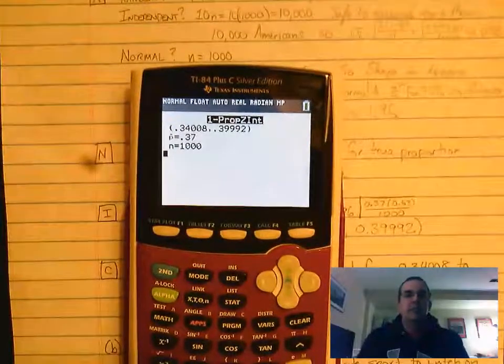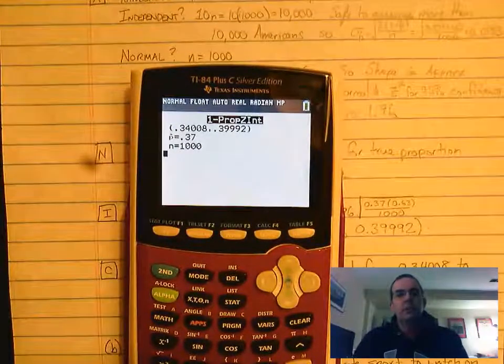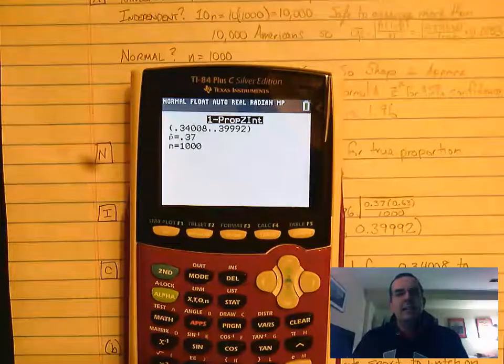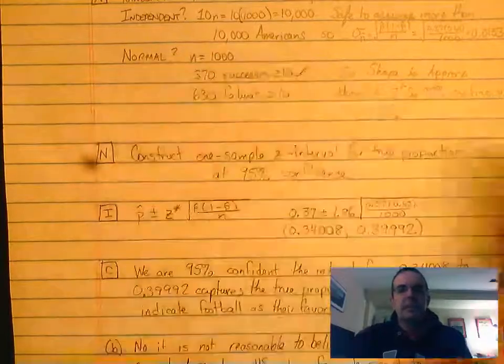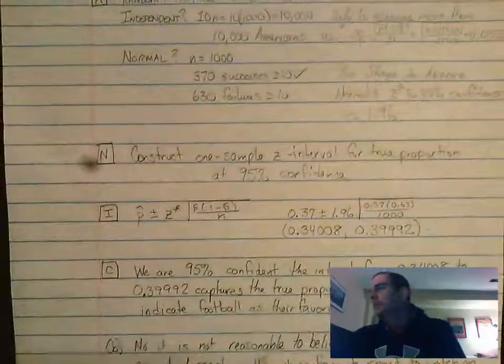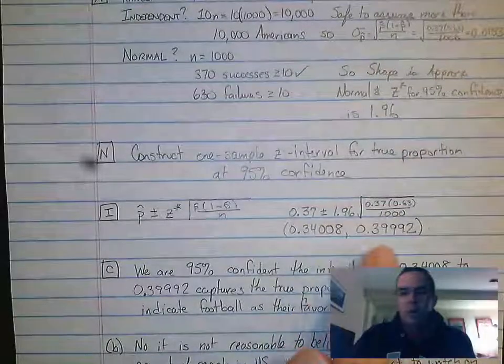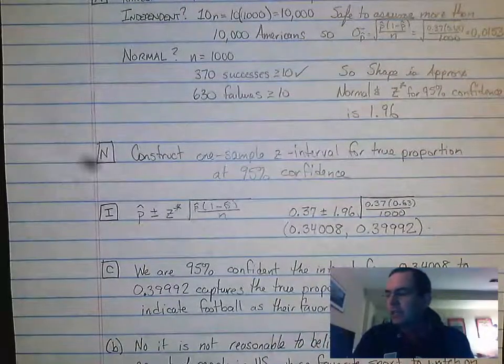And what it's going to do is it's going to give us the range, 0.34008 to 0.39992. So we're going to copy those numbers exactly. Don't round. Just copy them exactly as they are over there. And what we're going to do is keep the light back on. And we have our answer here, 0.34008 to 0.39992.